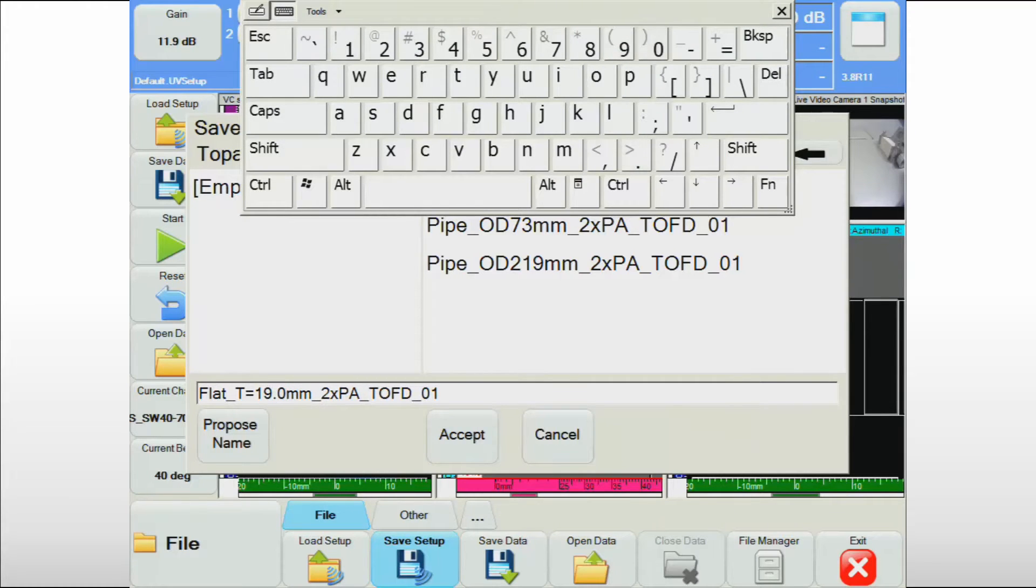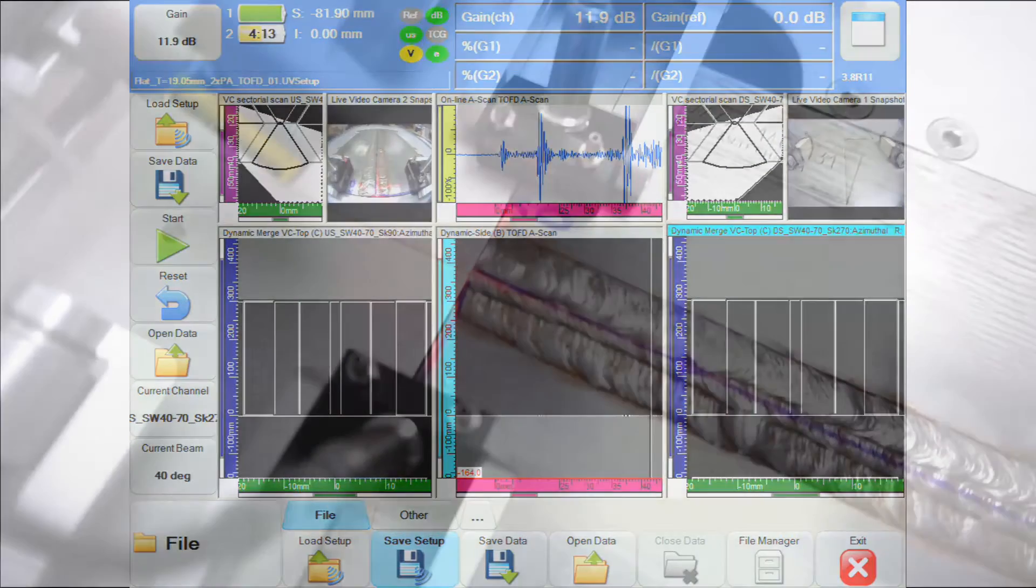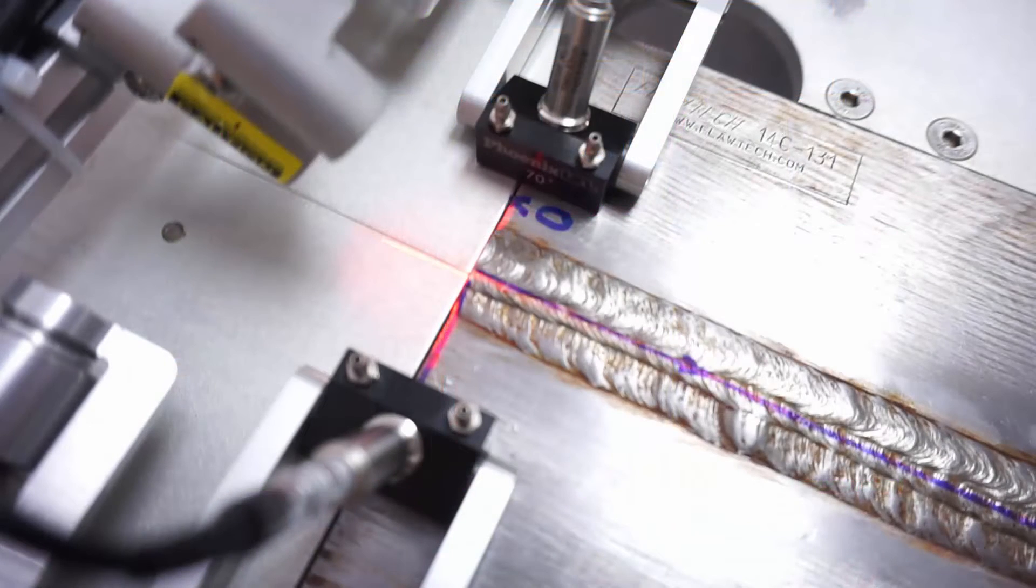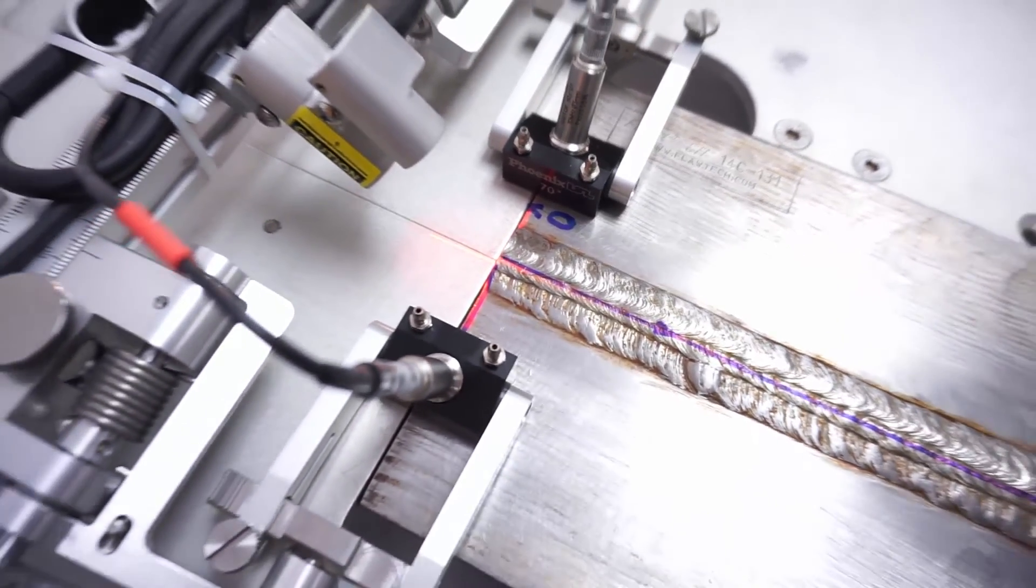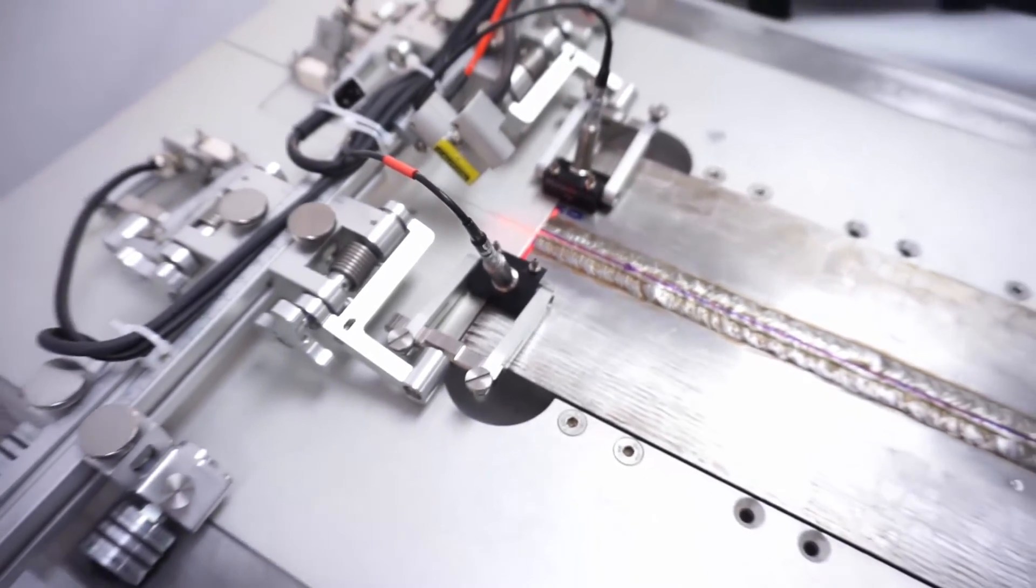During the job, the appropriate setup file can be simply selected from a list. In preparation of the inspection, the scanner is placed with the probes symmetrically on either side of the weld centerline. The laser guide can be very helpful in facilitating the installation.